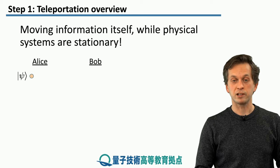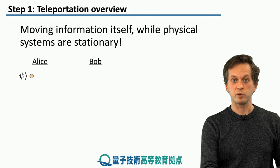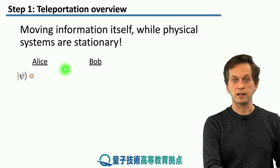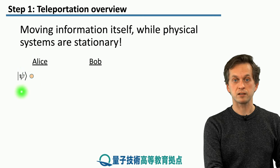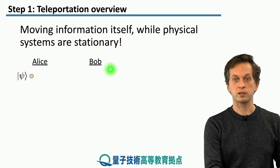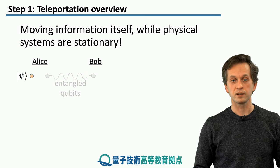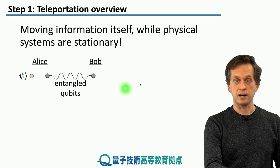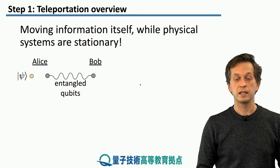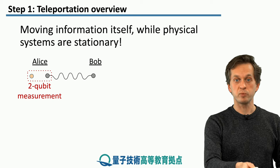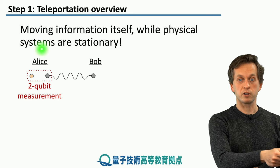And this is the outline of the protocol. We will consider our sender and call her Alice, and she wants to send this quantum state psi to her friend Bob. What they do is they start by sharing an entangled pair of qubits. Then what Alice does is a two-qubit measurement on both of her qubits.